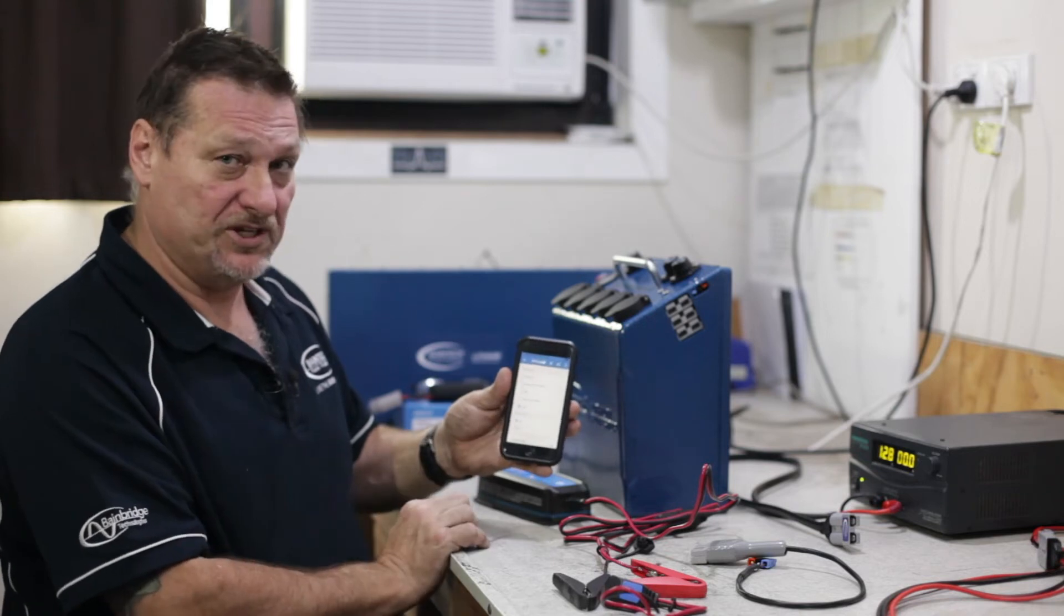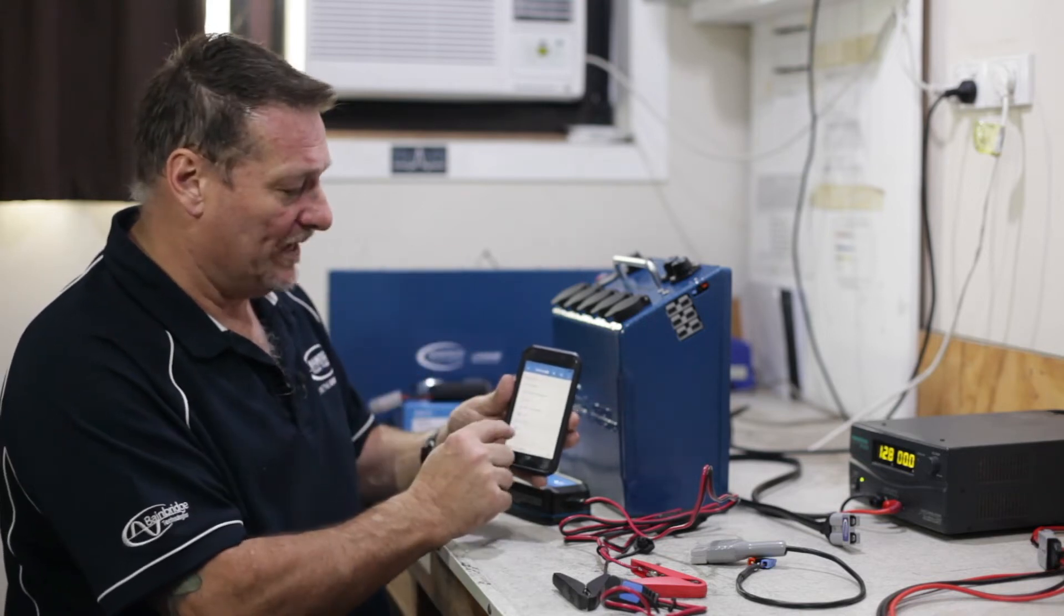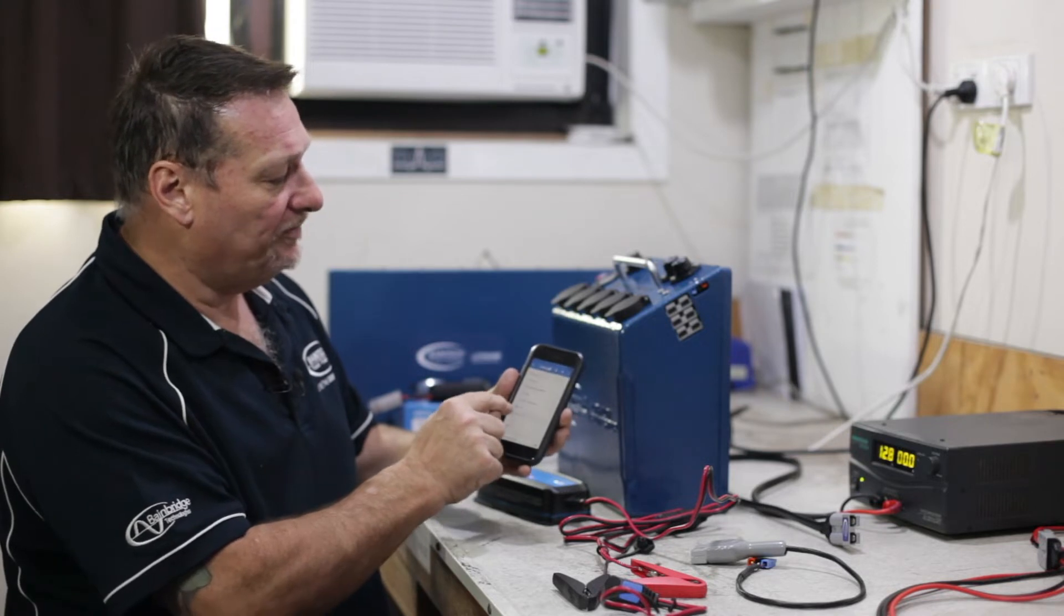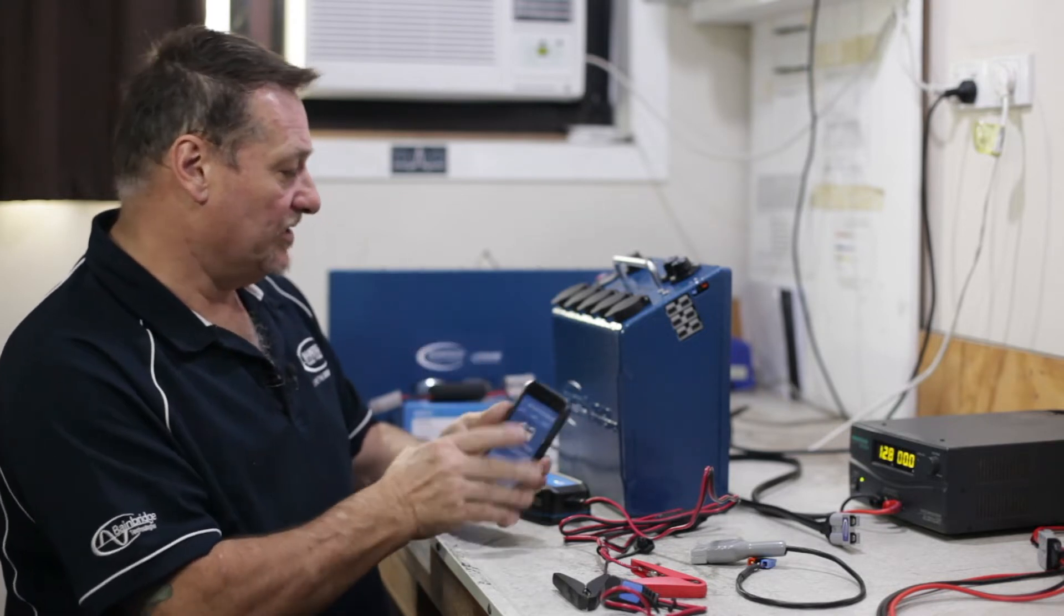Hit the mode button and it will show you lithium-ion, AGM high, AGM normal, or lithium-ion.